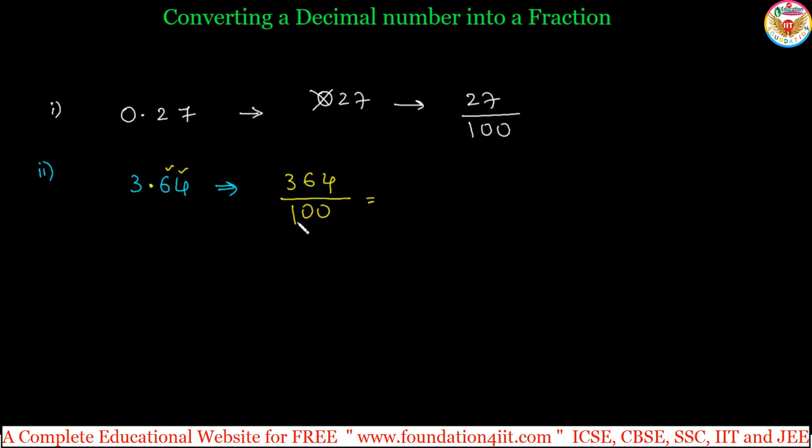You must make it into simplest form because it is possible. 27 by 100 has no common factor. 364 by 100 you can simplify - cancel with the two table. 2 times 5 is 10, and this is 2, 1, 8, 2.